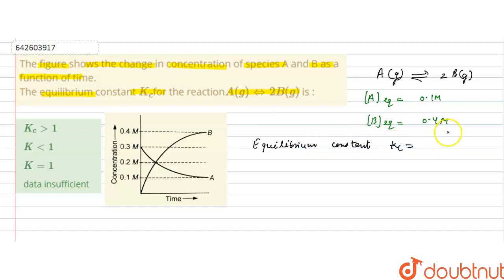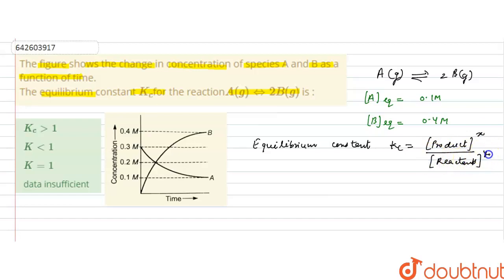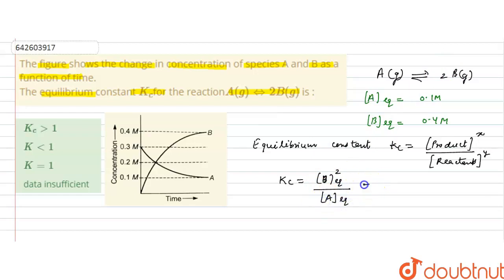The equilibrium constant Kc is defined as the concentration of the products raised to their stoichiometric coefficients divided by the concentration of the reactants raised to their stoichiometric coefficients. For this reaction, Kc = [B]² / [A], since B is the product with stoichiometric coefficient 2 and A is the reactant.